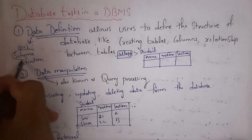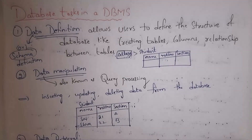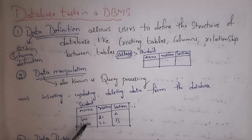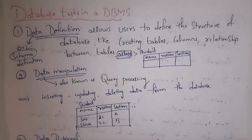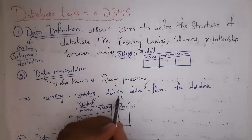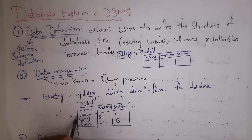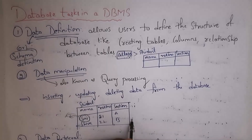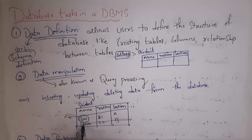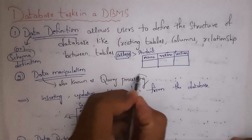Data manipulation means inserting data inside the database. For example, in the student table I inserted: name Sai, roll number 21, section A; name Shiva, roll number 21, section B. Not only inserting, but also updating and deleting data comes under data manipulation. For example, changing name Sai to Nagendra, or deleting the record for Shiva — all these operations come under data manipulation, also called query processing.